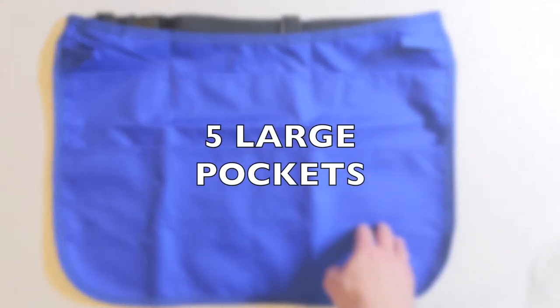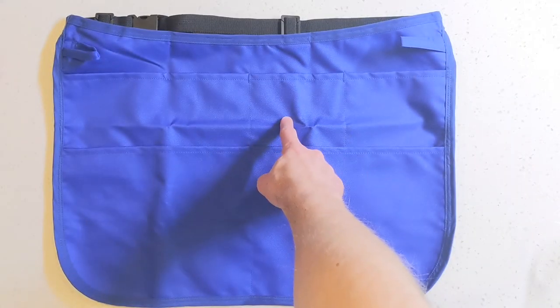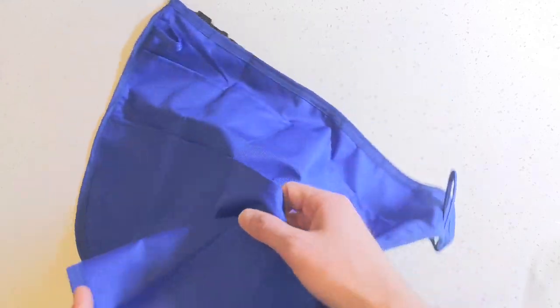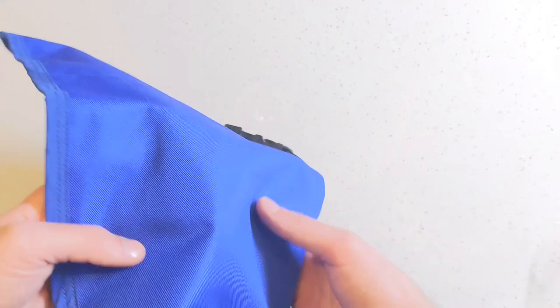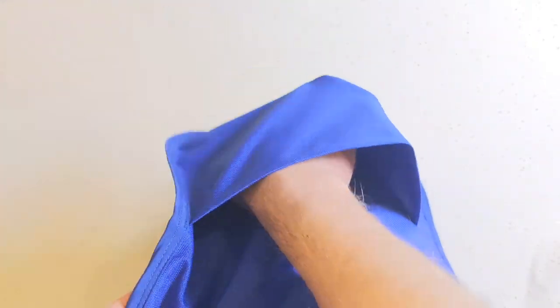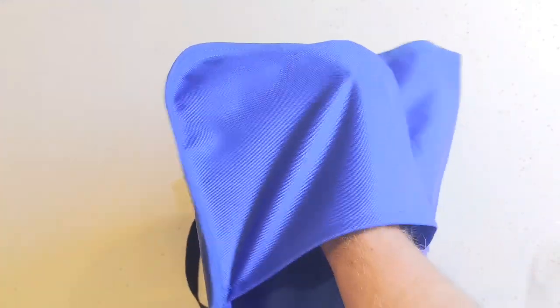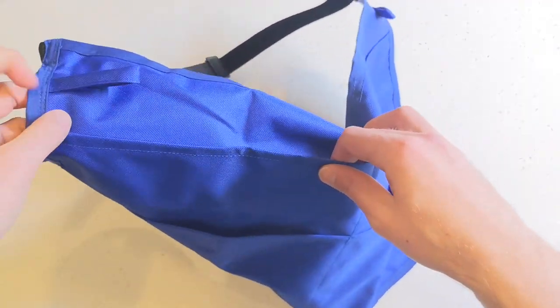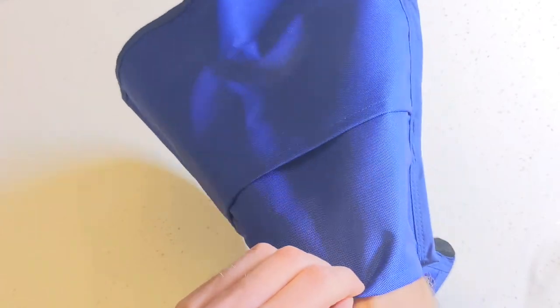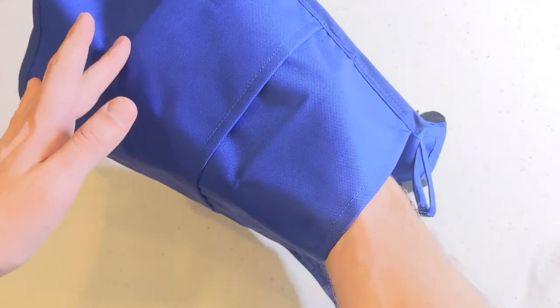The apron has five different pockets: one, two, three, four, and five. The two bottom ones are very large and very deep. As you can see, it can fit my entire hand inside the pockets. There's also an additional large pocket at the very top that is just as deep, goes down to about here.